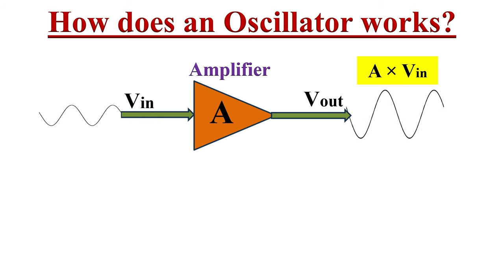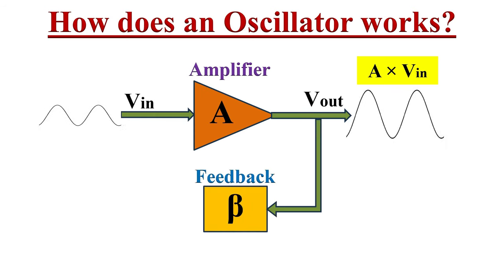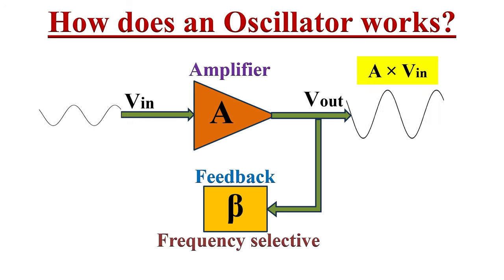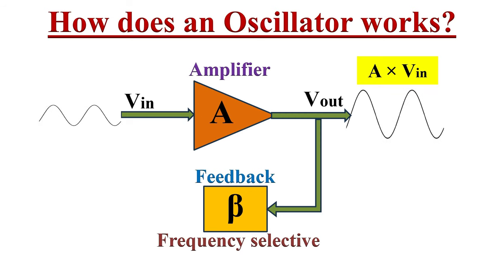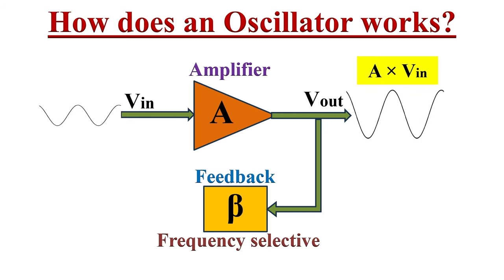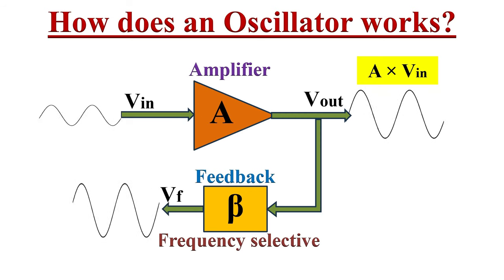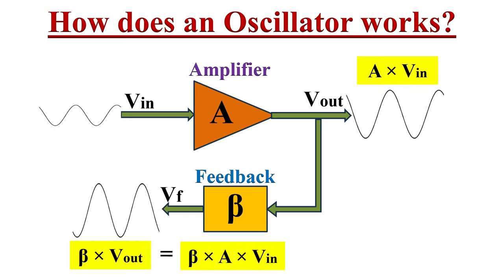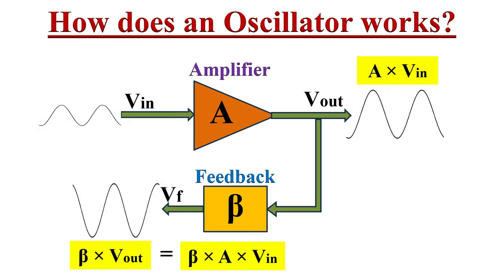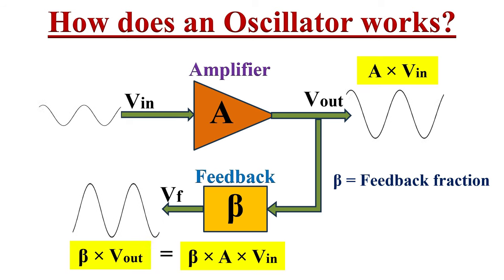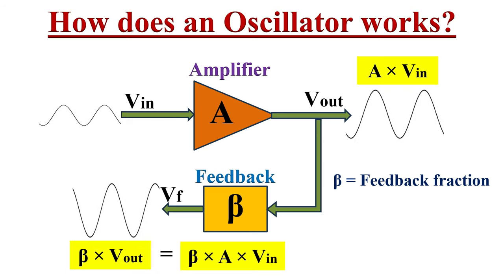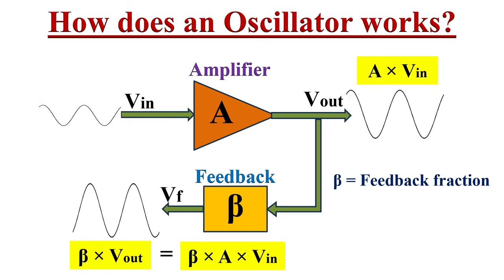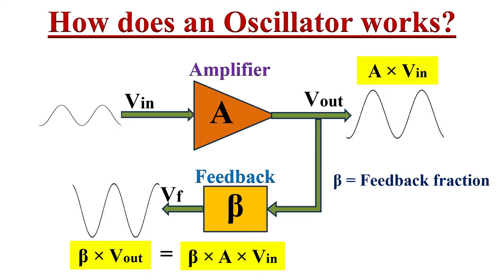Here, A is the gain of the amplifier. Now, if we apply the output signal V-out as an input to the feedback circuit — which in an oscillator is typically a frequency selective or resonant circuit — the output of this feedback circuit is Vf. So Vf can be written as beta times the output voltage, which equals A·beta times the input voltage. Here, beta is the feedback fraction, and it defines what fraction of the output voltage is reapplied as feedback to the input stage.